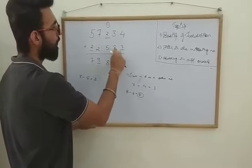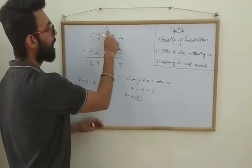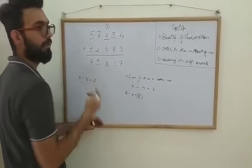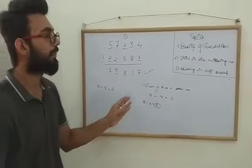Now we can check it. 4 and 3 is 7. 8 and 3 is 11, one carry 1. 2 and 1 is 3, 3 and 5 is 8. 7 into 9. 5 into 7. So in this way we can clearly check out how to find out the missing number.